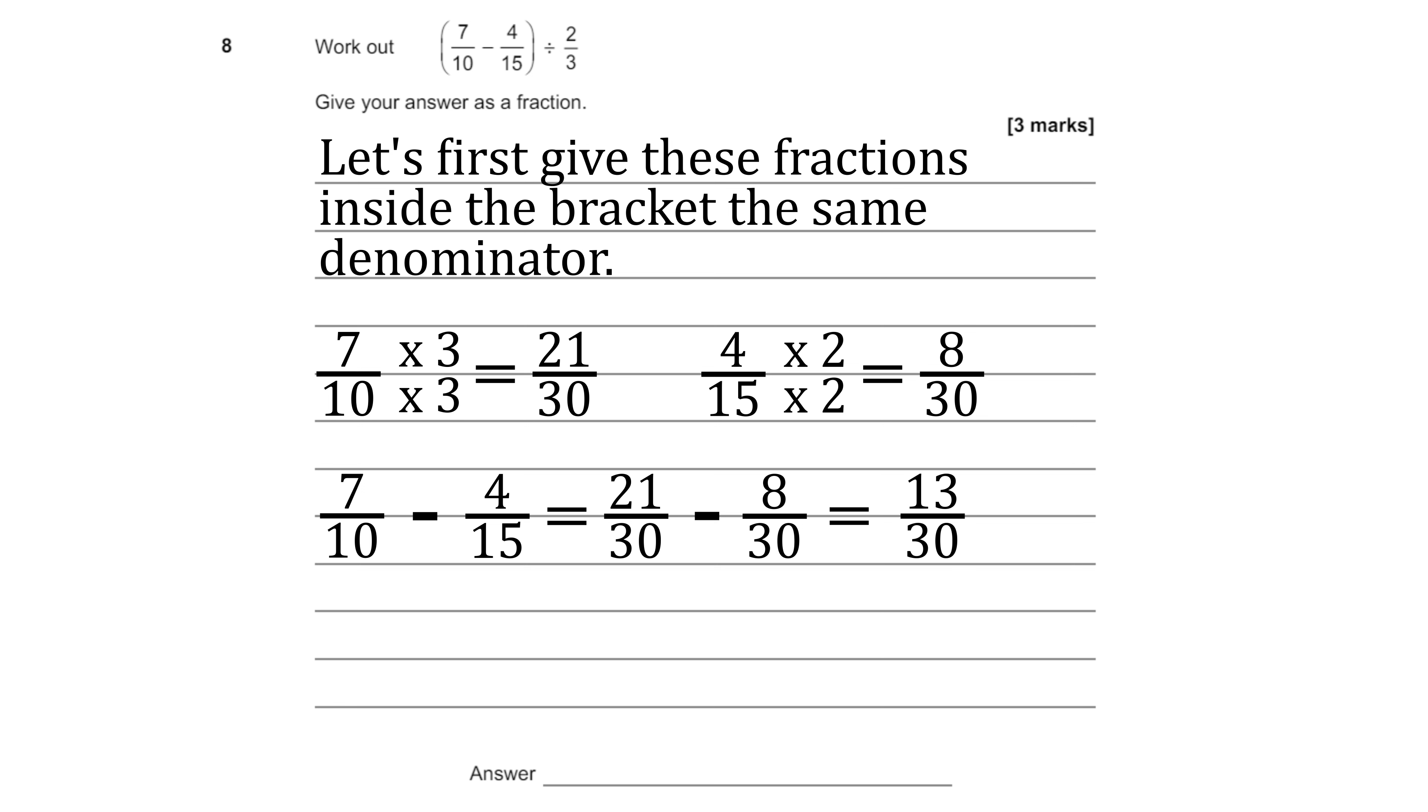So that would be the final amount we have inside the bracket 13 over 30 and we know we now have to divide it by 2 over 3. So 13 over 30 divided by 2 over 3. Well if you want to divide a fraction by a fraction what you can do is flip the fraction on the right and it just becomes a times. So this will be equivalent to 13 over 30 times 3 over 2 and this is going to be a lot easier to calculate.